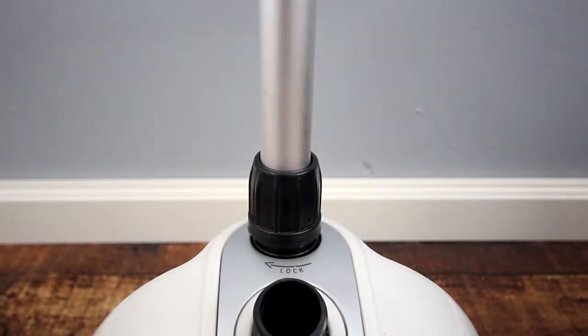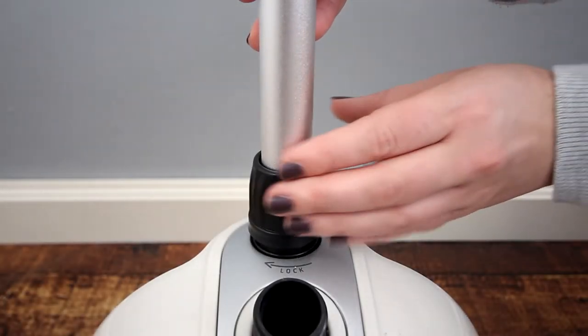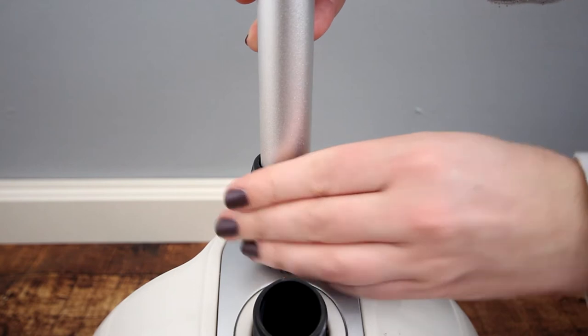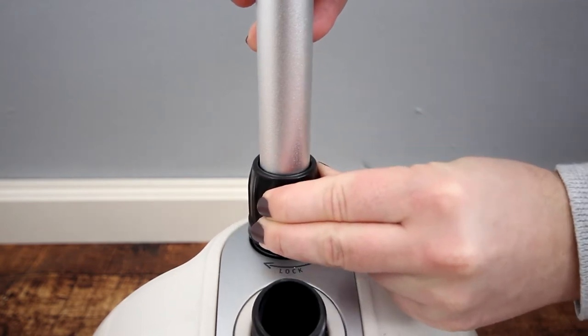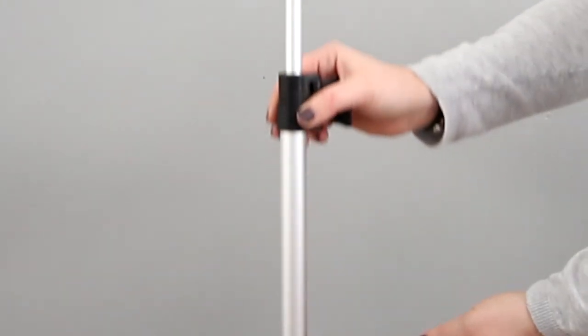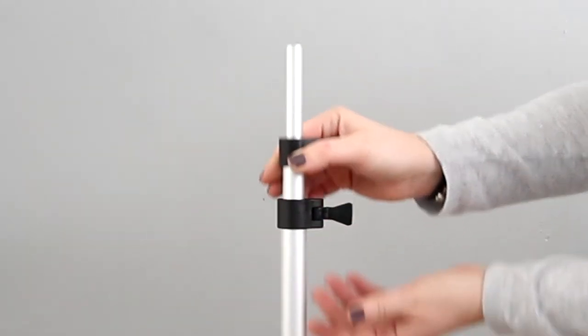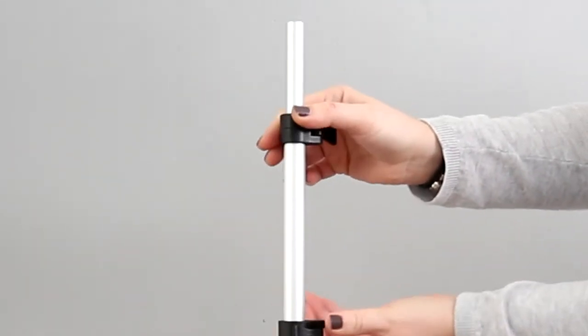Take the telescopic pole and ensure the pole nut is loose. Insert the pole and then tighten the nut. Extend the pole segments and tighten by clicking down the locks on each pole segment.